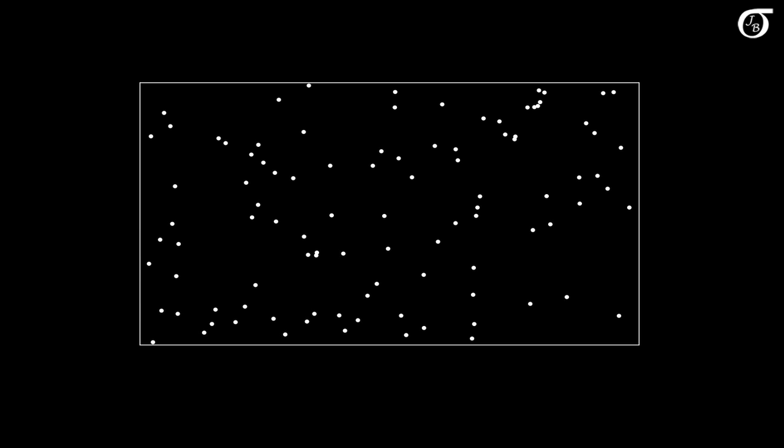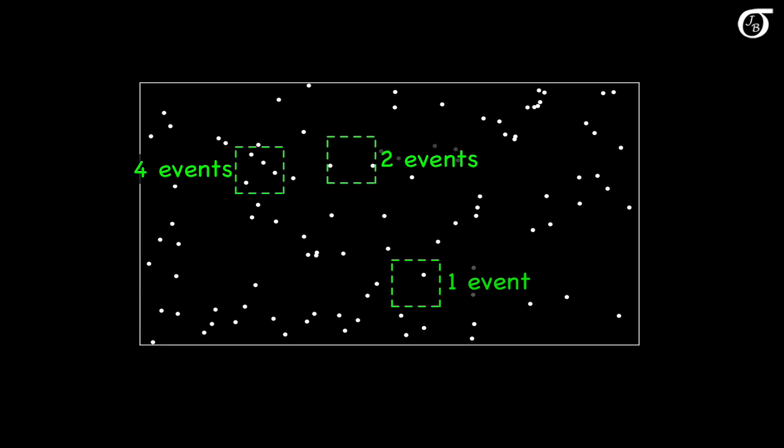Suppose we have a situation like this, in which dots are randomly scattered throughout this area — randomly and independently scattered throughout the grid, with the true theoretical rate of dots constant across the grid. We might see a pattern like this if we put a piece of paper on the ground and saw where the raindrops fell. If we randomly select a square meter and count up the number of events: this green square has 4 events, another selection gives 2 events, another gives 1. Would the Poisson distribution provide a reasonable approximation? Yes — the conditions of the Poisson are perfectly satisfied here.